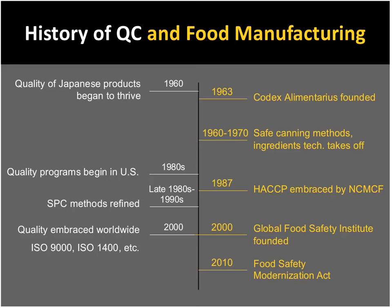Since 2000, the Global Food Safety Institute took the international standards developed by Codex Alimentarius in the 1960s and updated them for the supply chain. This was a result of the globalization of the food industry, where companies buying products from different companies needed a standard to audit and evaluate against, specifically for management in the food industry. The Food Safety Modernization Act also emphasizes the importance of implementing a top-notch quality management system.